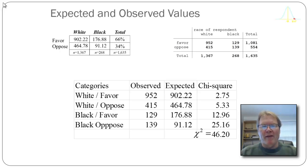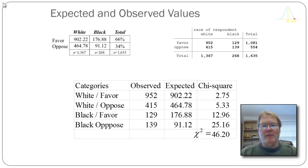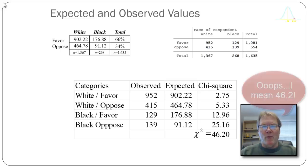Under categories I have white-favor, white-oppose, black-favor, and black-oppose. I lay out my observed and expected values. In the column labeled chi-square, I'm calculating the difference between observed and expected and dividing through by the expected value — those are the cell chi-squares. Summing them up, I get a chi-square of 46.12.